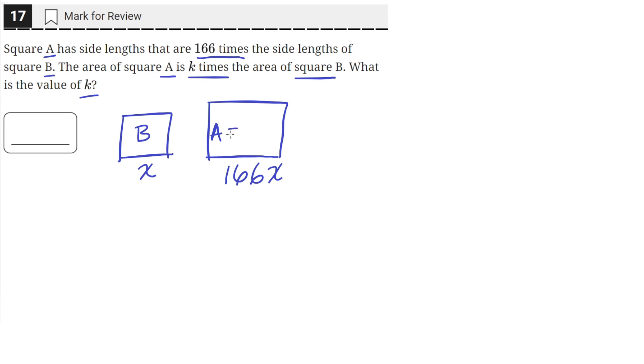And the area of square A is equal to k times the area of square B. So we'll just say the area of square B is y, so it's ky.